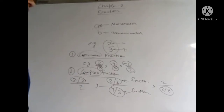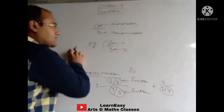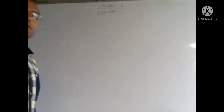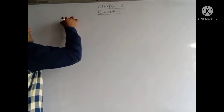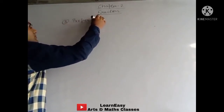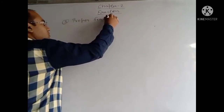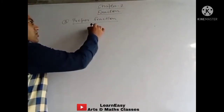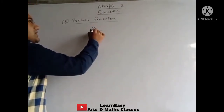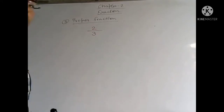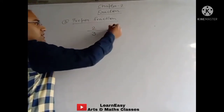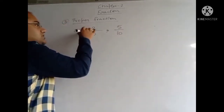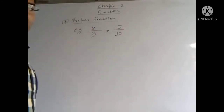The third type of Fraction is Proper Fraction. What is a Proper Fraction? If the numerator of the fraction is less than the denominator, it is a Proper Fraction. For example, 2 upon 3 — numerator is less than denominator. Another example is 5 upon 10 — numerator is less than denominator. Such fractions are examples of Proper Fractions.